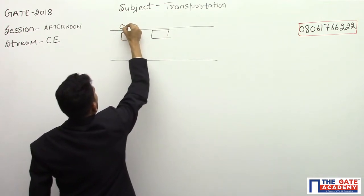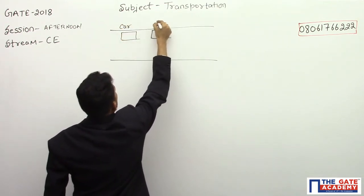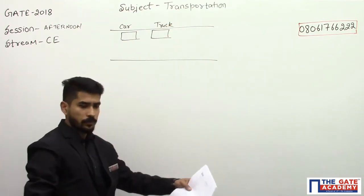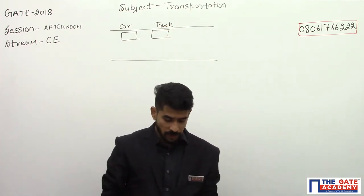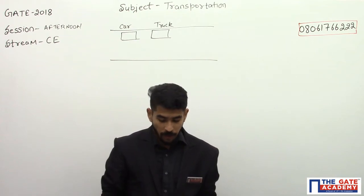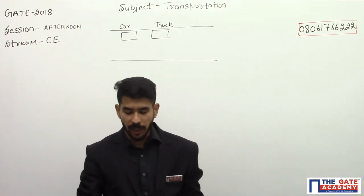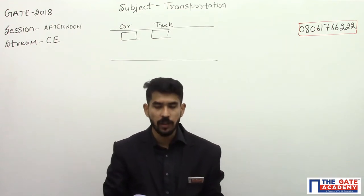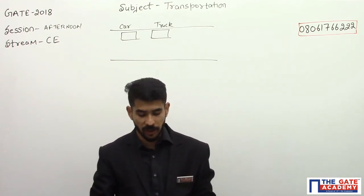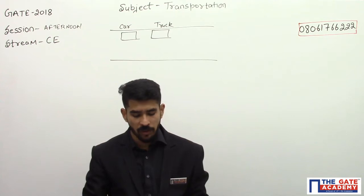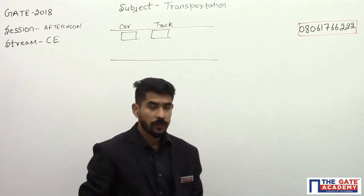So here we have a car and a truck. The truck moves at a speed of 10 meters per second. On finding a clear gap in the opposite traffic stream, the car accelerates at an average rate of 4 meters per second square, overtakes the truck, and returns to its original lane.